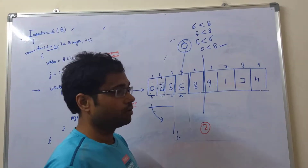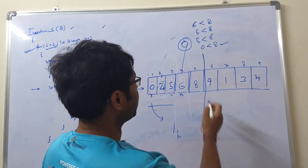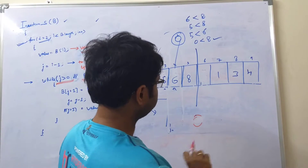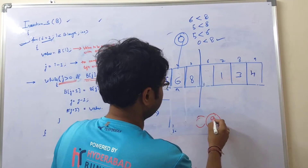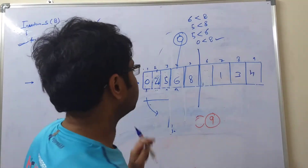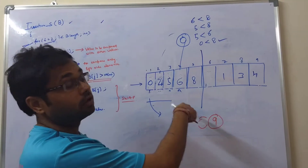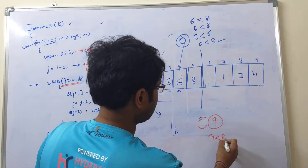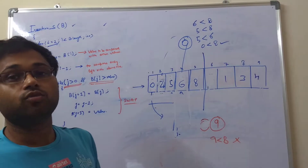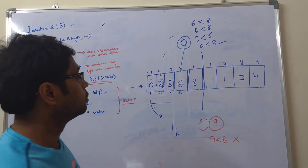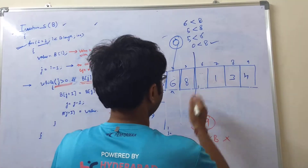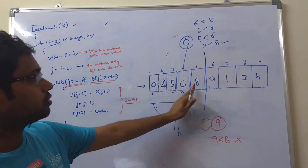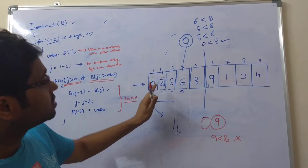Now we take another number — 9. Our key value is 9. So nine is greater than 8 — the condition '9 is less than 8' is false. So it does not need any swap. Nine will remain in its place because it is already sorted. We do not need to compare it with any other elements since 9 is already greater than 8.